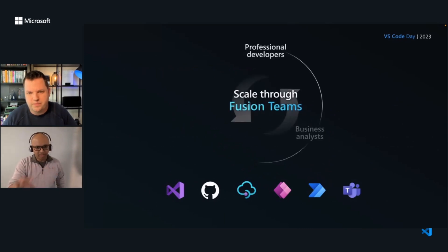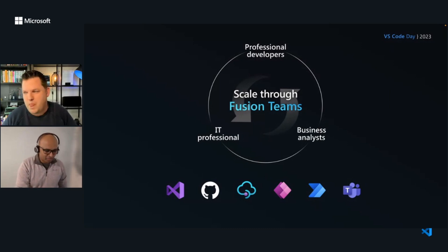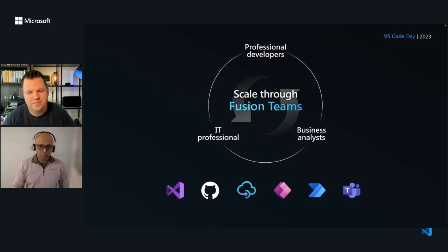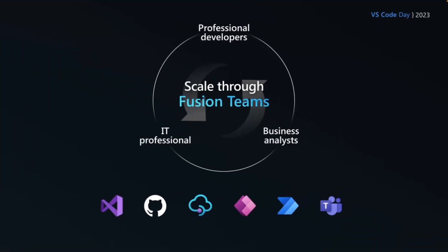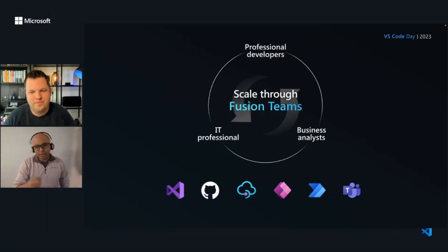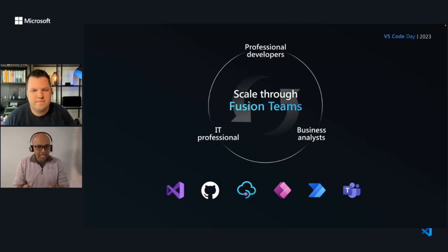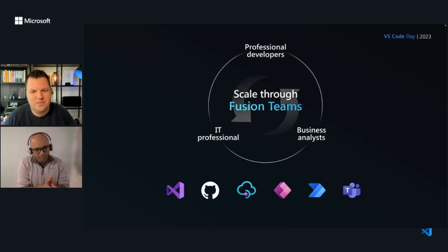The key essence we're talking about is something called fusion teams. Daniel covers a wide array of folks because of the innovation brought about by low-code application platforms. Professional developers build robust backend APIs, and low-code applications are used to extract value from data sources — all within the guardrails that IT professionals put in place. That's what a fusion team is. And because of low-code application platforms, this has now accelerated tenfold.